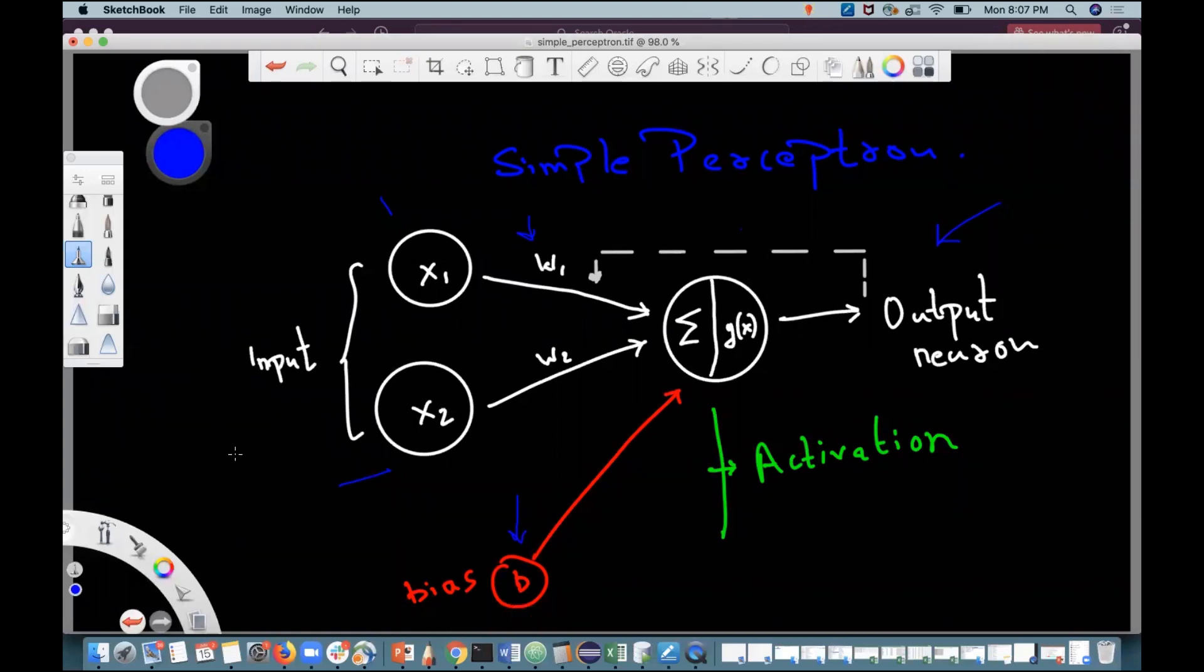Now in this simple perceptron case, just imagine that there is only one neuron. Initially we will initialize this w1 and w2 and bias as some random number. The goal of the learning is that it will automatically adjust the weights and biases to learn a complex function.